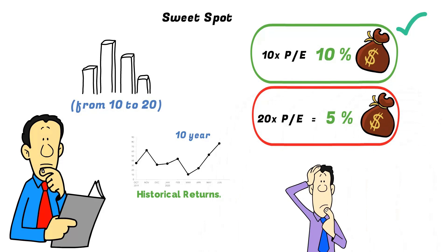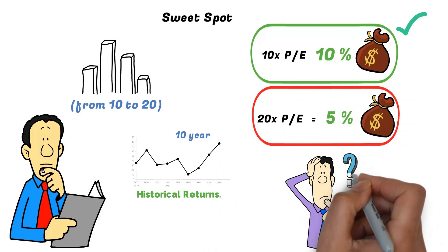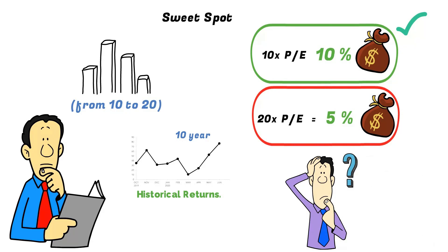But why are the 20x P/E and a 5 percent yield considered good if I want closer to a 10 percent return? Well, that's where growth comes in.